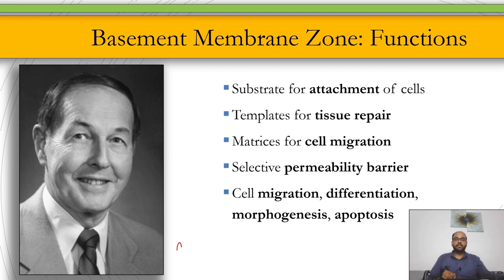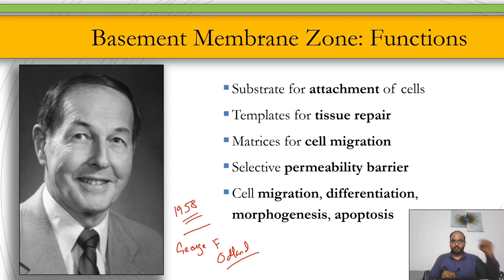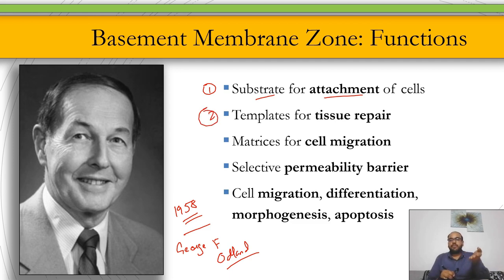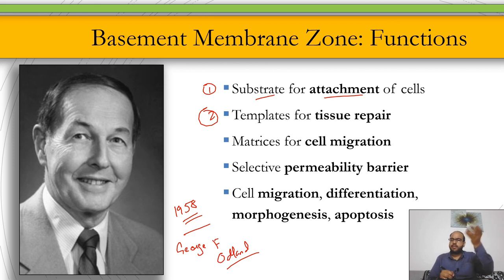The basement membrane zone was first described by George F. Odland around 1958. Its functions are: it acts as a substrate for attachment of cells — a base on which cells rest and attach; it acts as a template for tissue repair, meaning repair starts from the basement membrane level, as seen in regenerating pemphigus where lower layers regenerate while upper layers undergo necrosis.